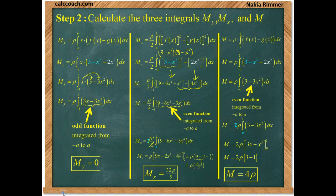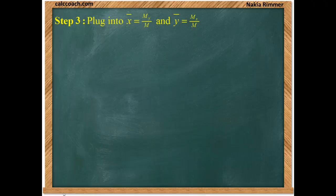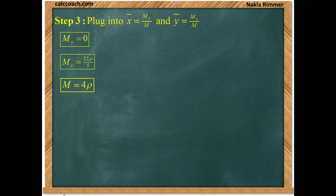Now, we just need to plug in. So, x bar is the moment about the y-axis over the mass. And y bar is the moment about the x-axis over the mass. We calculated those three quantities. So, x bar is definitely bound to be 0. And sometimes, you can just use symmetry to say that. As long as density is constant, if you have symmetry across the y-axis, x bar is bound to be 0.